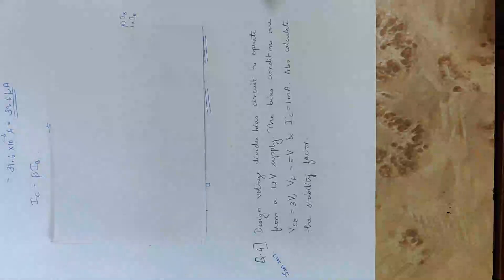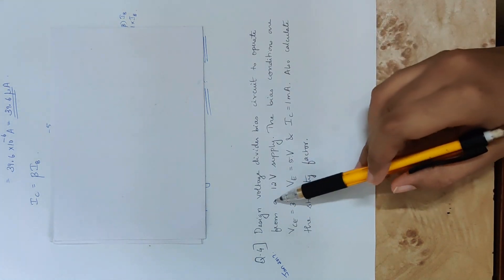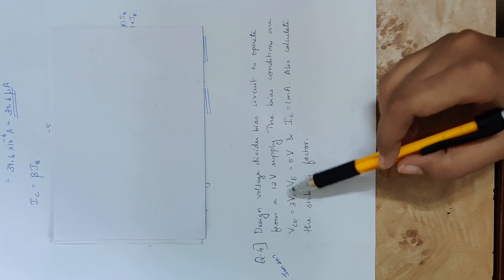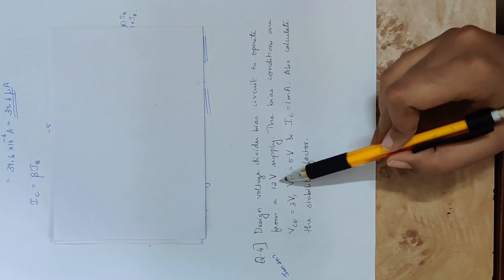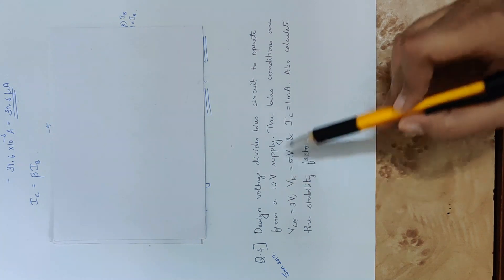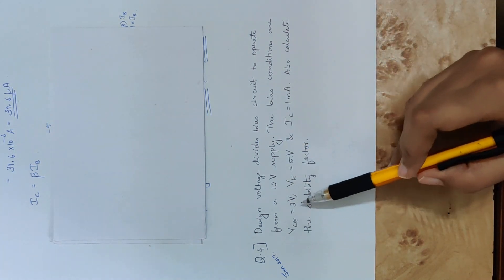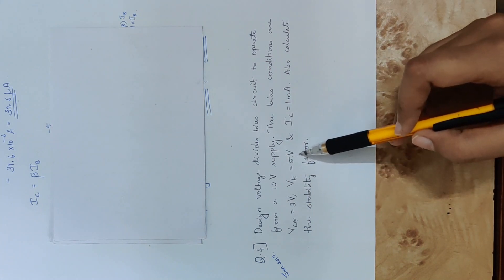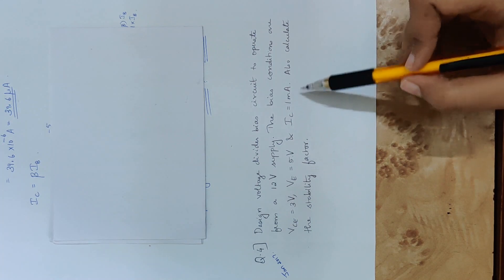We will discuss a problem on voltage divider bias circuit. The question is: design a voltage divider bias circuit to operate from a 12 volt supply (VCC). The bias conditions are VCE equal to 3 volt, VE equal to 5 volt, and IC collector current equal to 1 milliAmpere.